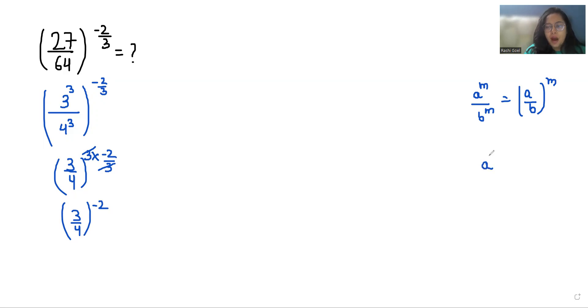Now a power negative 1 we can write it as 1 by a. So here 4 by 3 power 2.